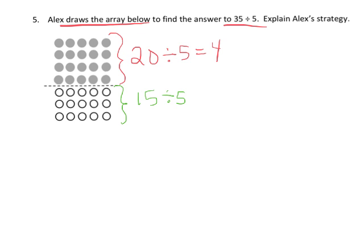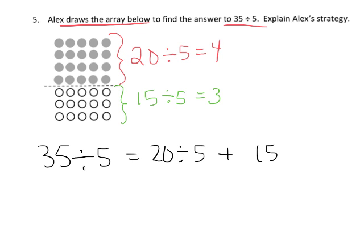So let's see, 20 divided by 5 is 4, 15 divided by 5 is 3. So what Alex did was he took the 35 divided by 5 and he used the distributive property to turn it into 20 divided by 5 plus 15 divided by 5. And that means 20 divided by 5 is 4.